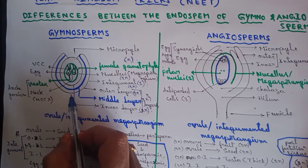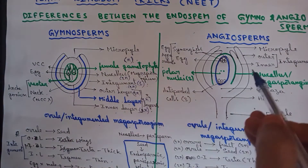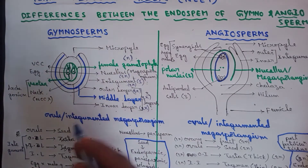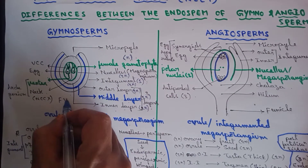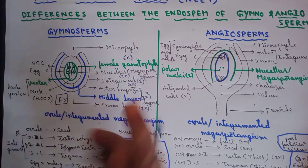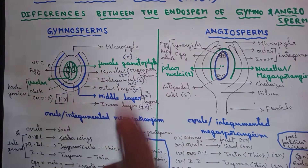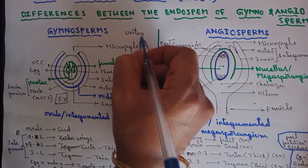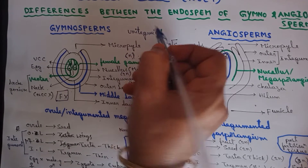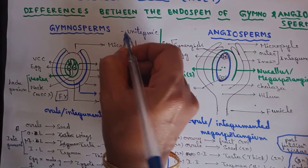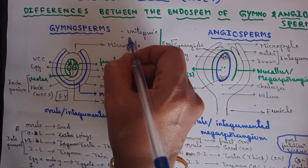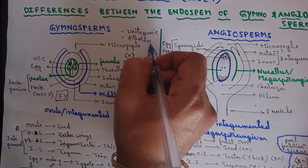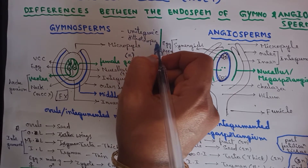In the ovule of gymnosperms there is no funicle, unlike in angiosperms — funicle is absent. The ovule of gymnosperms is a unitegmic ovule because it is covered by only one integument. It is also an orthotropous ovule because it is straight and without a funicle.